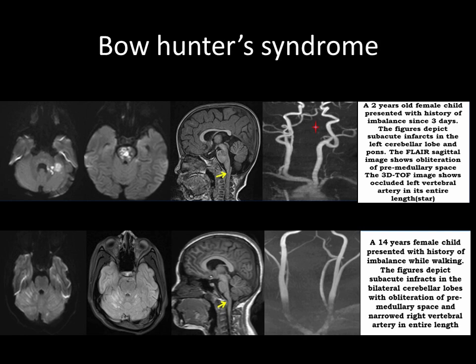Here is a two-year-old female child who presented with a history of imbalance since three days. These figures depict subacute infarcts in left cerebellar lobe and pons. The FLAIR axial image shows obliteration of premedullary space, depicted by the yellow arrow. The 3D TOF image shows occluded left vertebral artery in its entire length, depicted by an asterisk.